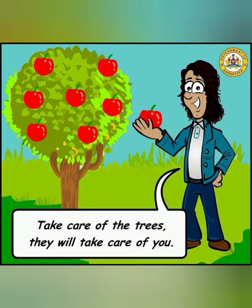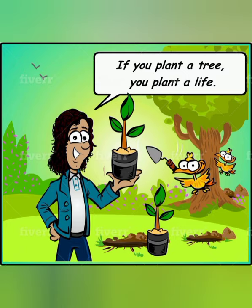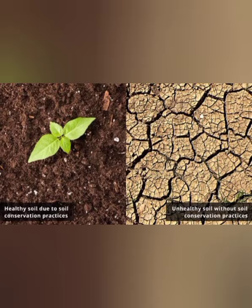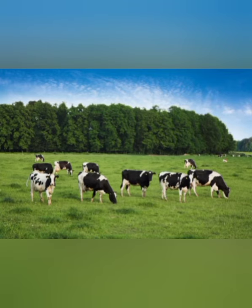Growing bushes and trees along the edges of the farmland acts as wind barriers, as they reduce the speed of wind, thus reducing soil erosion. Around the edges of the field, we should grow plants or trees which will reduce erosion.